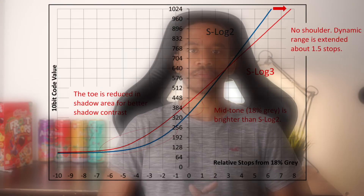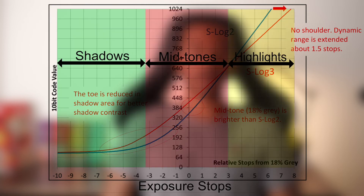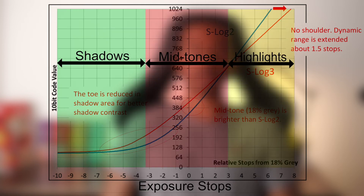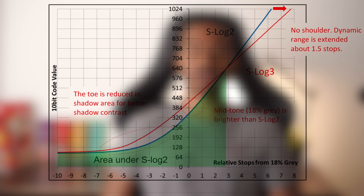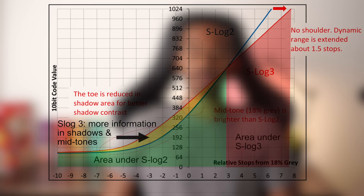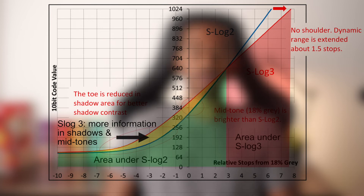By comparing the shape of the curves, we can understand how the log profiles store data. Here is a plot of the S-Log2 and S-Log3 curves. The three main regions are the shadows, midtones, and highlights. We can think of the area under the curve as a measure of the amount of data recorded in that region. Based on this plot, S-Log3 records more information in the shadows and midtones, and S-Log2 records more information in the highlights.